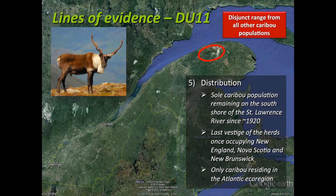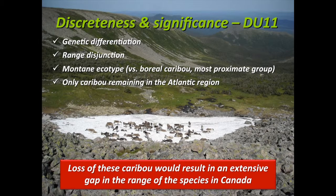It's also the last vestige of caribou that once occupied the northeastern United States — New England — as well as Nova Scotia and New Brunswick. From a distribution point of view, being in a range totally disconnected from other caribou populations, and being the only caribou residing in the Atlantic ecoregion, it's worth attributing a designable unit to that population. They are genetically differentiated, their range is disconnected, they belong to the mountain ecotype distinct from boreal caribou, and they're the only caribou in the Atlantic ecoregion.